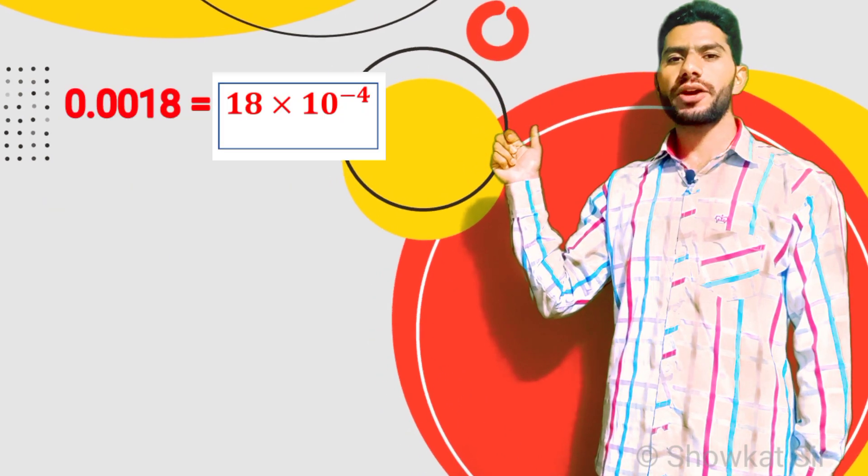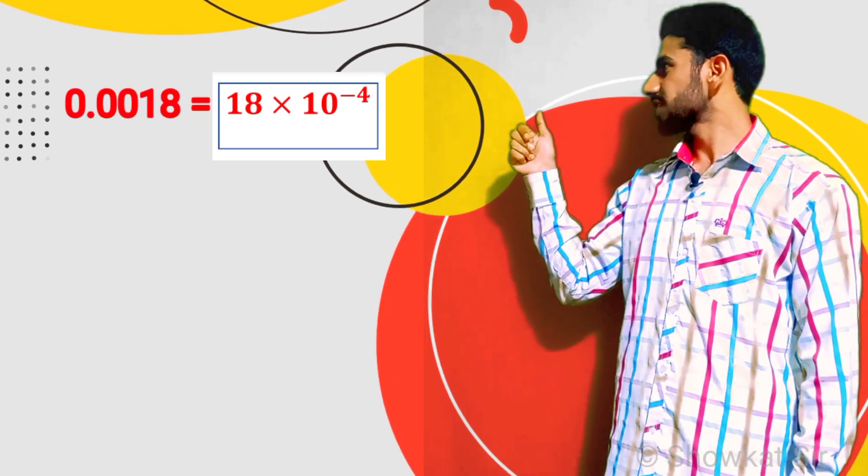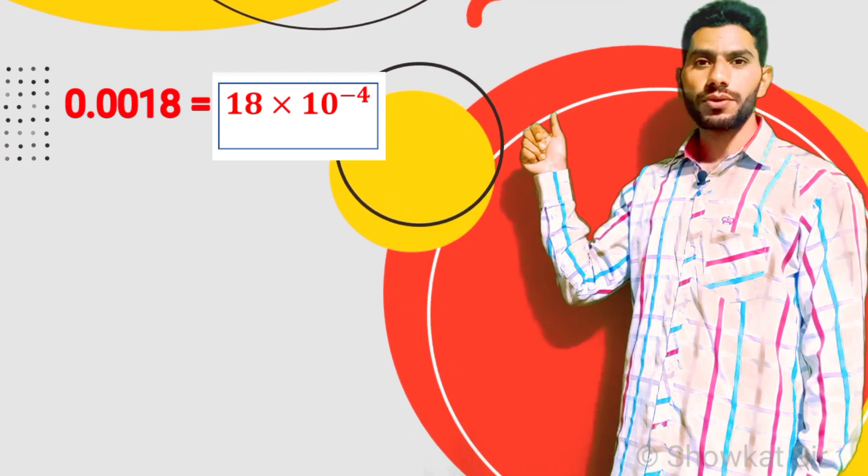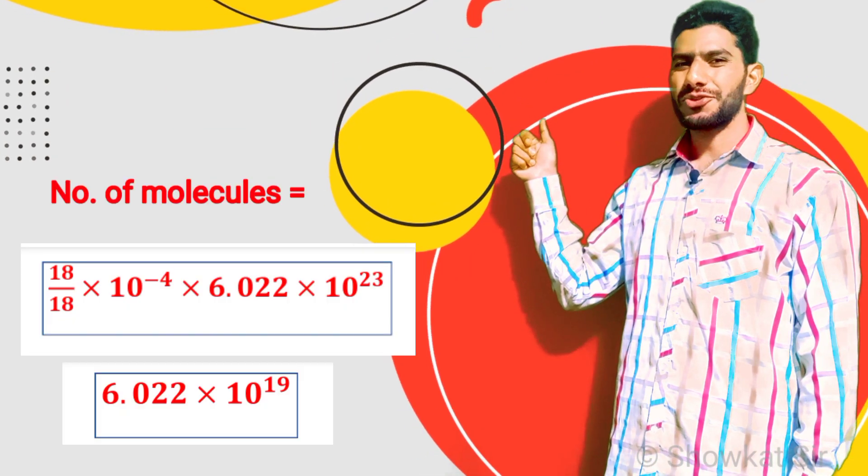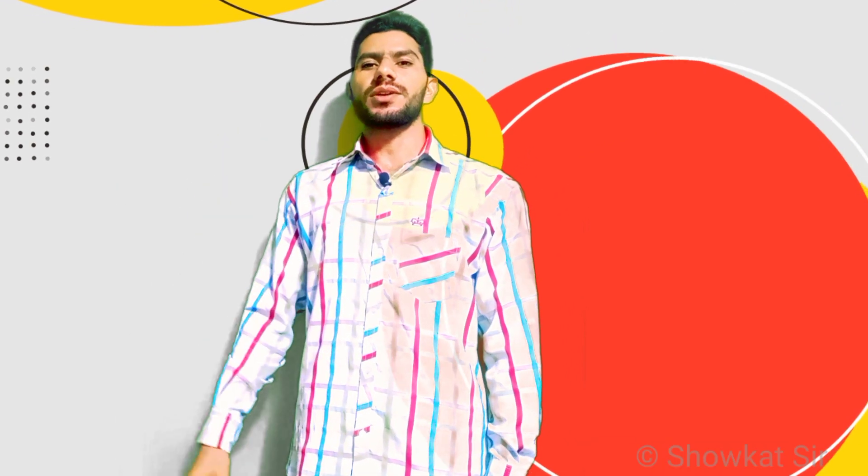In place of this 0.0018 grams, you can write 18 × 10^-4. So the final answer will come out to be 6.022 × 10^19 molecules. Now there is another question given.